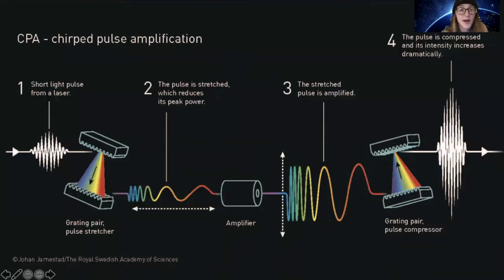The stretched pulse is passed through an amplifier where its energy per pulse increases, but the pulse length is long enough so that the peak power does not cross the damage threshold of the laser's optics. Then the pulse is compressed back to its original duration, again with a pair of gratings. After the amplification and compression, the peak power can be dramatically increased.